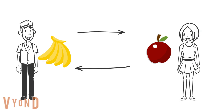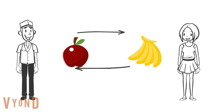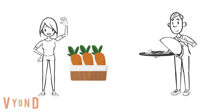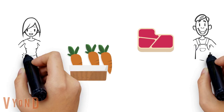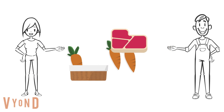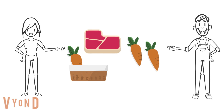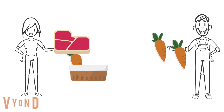For example, Mary grows carrots, but she wants some steak for her dinner. Mike has some delicious steak, so he offers to swap her some carrots for his steak. Swapping the carrots for the steak is swapping one good for another good. This is called barter.